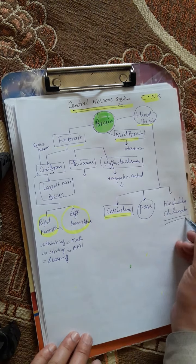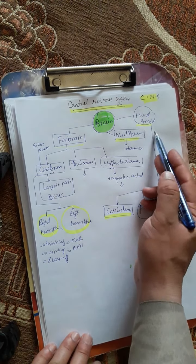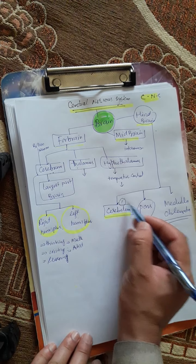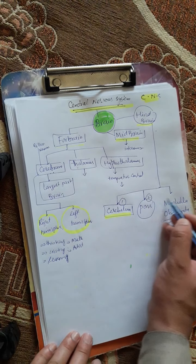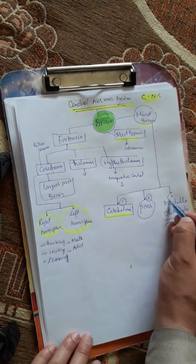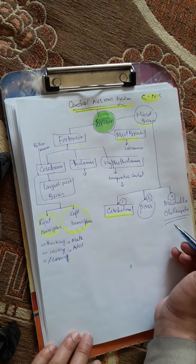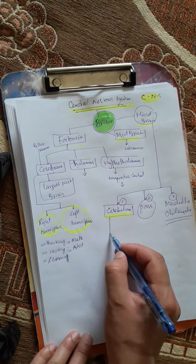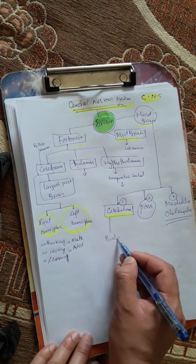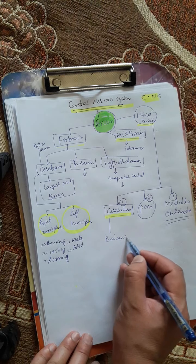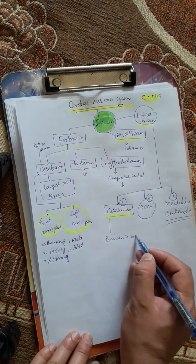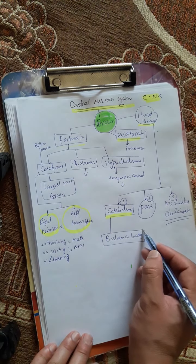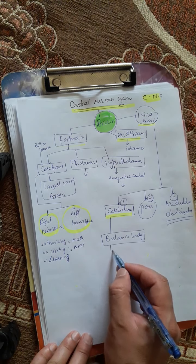There are three parts of the hindbrain: cerebellum, pons, and the third one is the medulla oblongata. The cerebellum's function is the balance of the body.